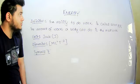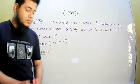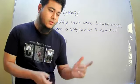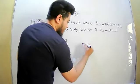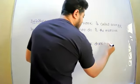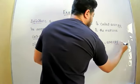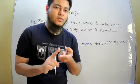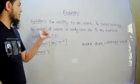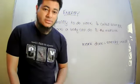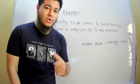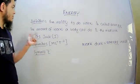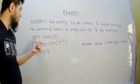Today we are going to study the topic energy. Always remember: work done is equal to energy used — work and energy are always equal to each other. The ability to do work is called energy. That means if you can do some work, then only you can say that you have energy. If you cannot do any work, you cannot say that you have any energy. The amount of work a body can do is the measure of its energy.